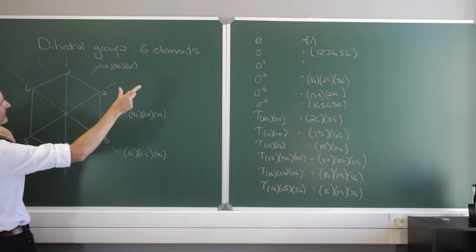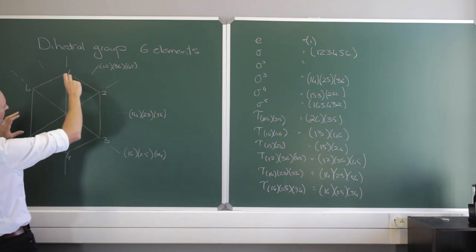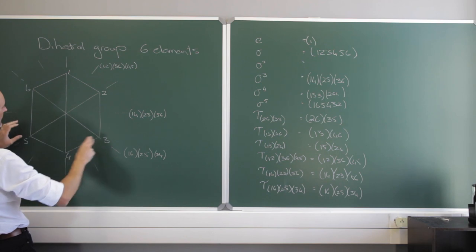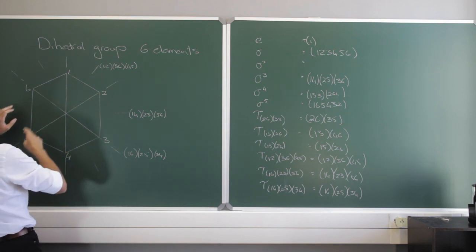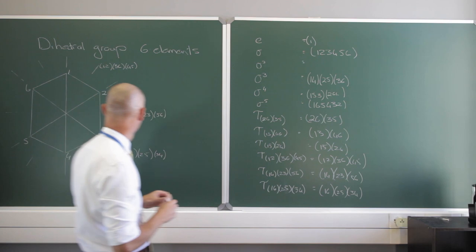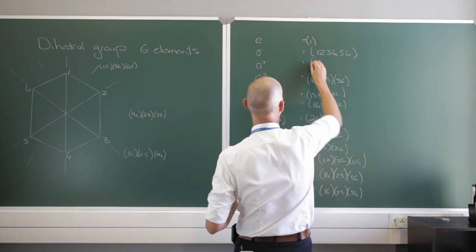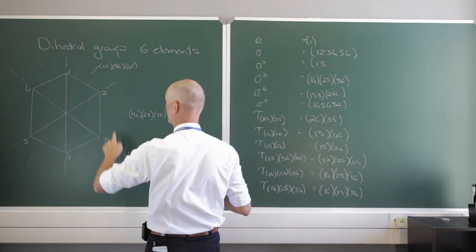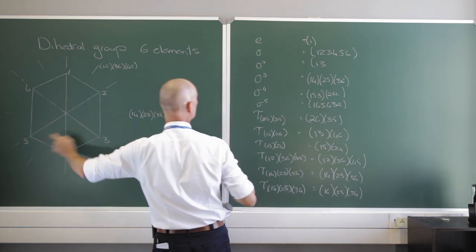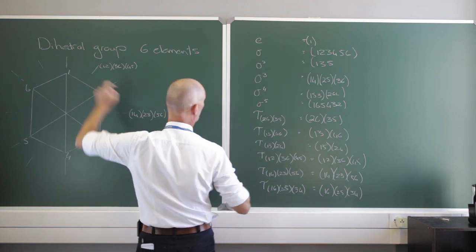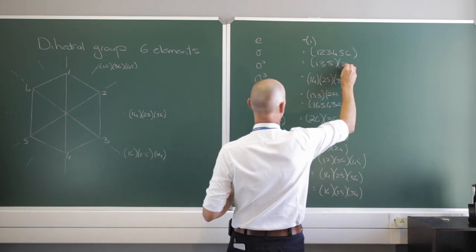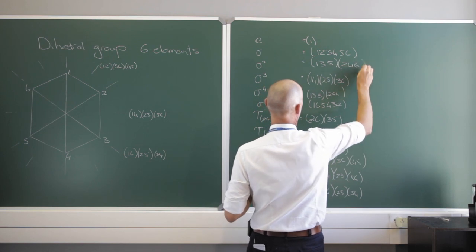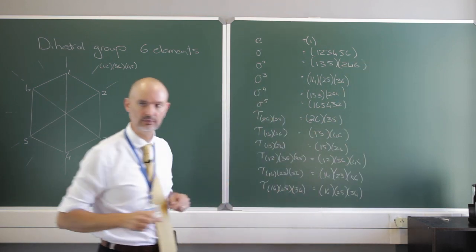Let's rotate it twice — we'll call that sigma squared. So 1 is going to go to 3, 2 to 4, 3 to 5, 4 to 6, and 6 to 2. In cycle notation: 1 goes to 3, 3 goes to 5, and 5 goes back to 1 — that closes. Then 2 goes to 4, 4 goes to 6, and 6 goes back to 2. We see that cycle.